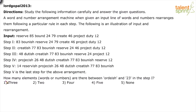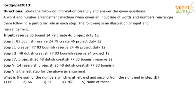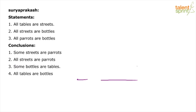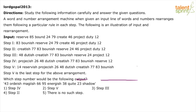The other two questions likely require the input to solve. One asks how many elements and what numbers are between orderish and 23 in step 1. The next question asks: what is the sum of the numbers at the left end and second from the right end in step 3? Step 3 is given in question 1. The number at the left end is 43 and second from the right end is 38, giving 43 plus 38 equals 81.